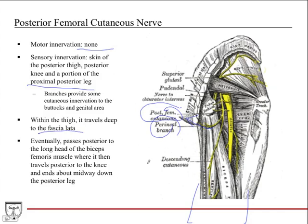It travels down deep to the fascia lata and then eventually passes posterior to the long head of the biceps femoris muscle, where it then travels posterior to the knee and ends about midway down the posterior leg.